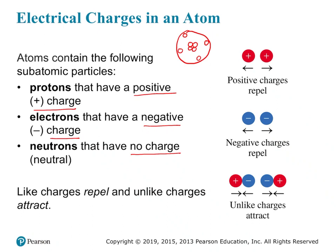Like charges repel each other, and unlike charges attract. So if we have two protons near each other, they have positive charge and are going to naturally repel each other. The same with electrons — they're negatively charged and will also repel each other. However, opposites attract, so if we had a proton and an electron near each other, those are going to attract.